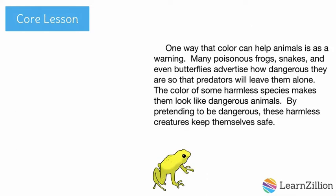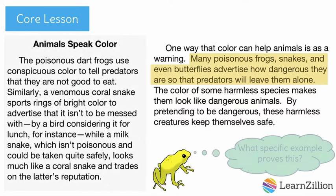Let's start by looking at this paragraph from my essay. What's the main idea that I'm trying to prove here? This paragraph is all about how color can help animals as a warning. I state that color can show how dangerous they are so they won't get eaten. But I didn't give any examples to support this. I need to look back at the article I took this information from to find more evidence that proves this. I'm looking for a specific example of an animal's color that warns it is dangerous.